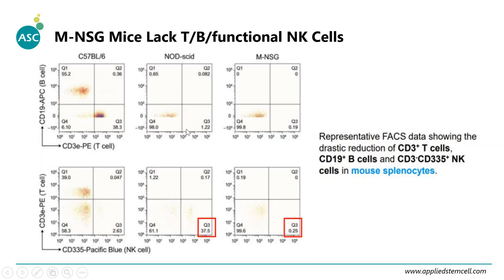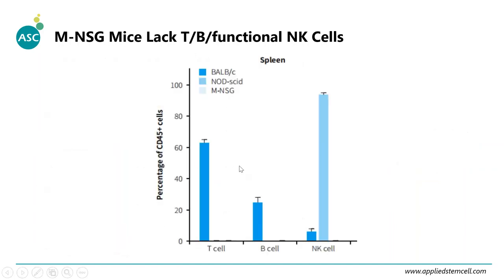Compared to wild-type mice, flow cytometry data show a dramatic reduction of CD3 T cells and CD19 B cells. Comparing NSG to NOD-SCID mice, the NK cell component — marked as CD3-negative, CD335-positive cells — is totally removed in NSG mice. This is confirmed by mouse spleen samples, with a bar chart showing a significant reduction of NK cells in spleen tissue compared to SCID or nude mice.